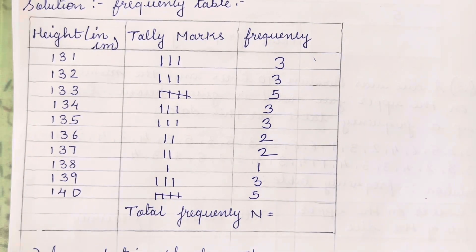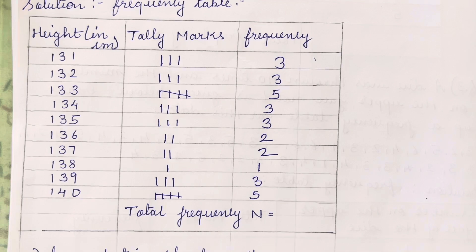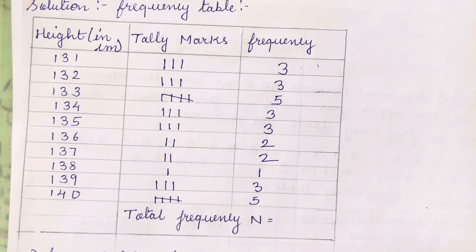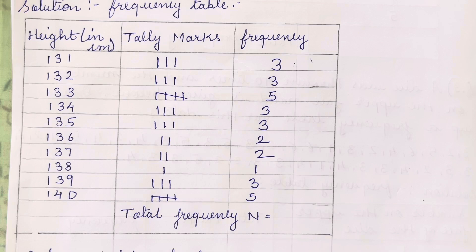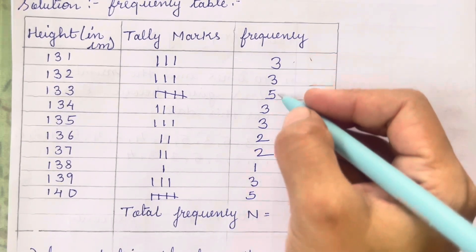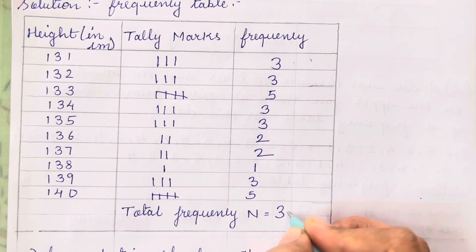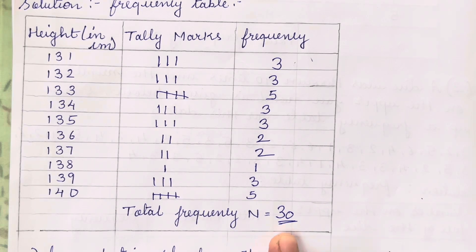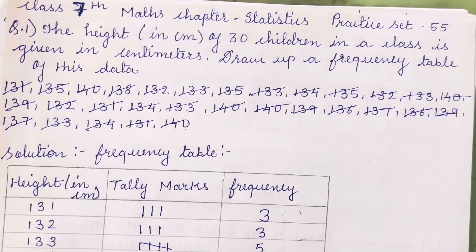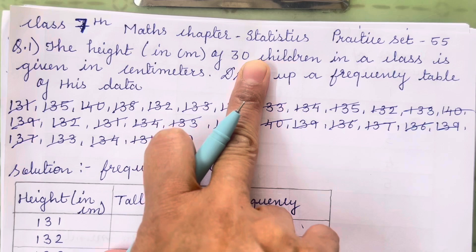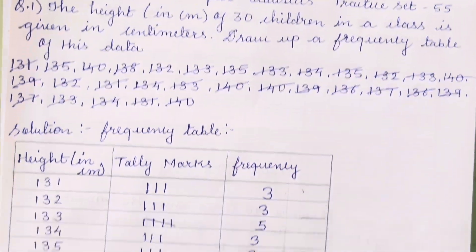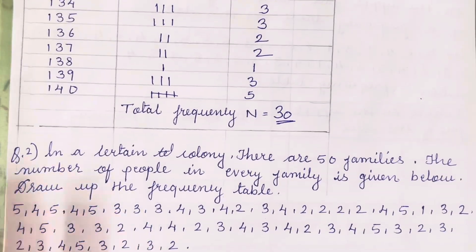Now that tally and frequency are done, you have to calculate the total frequency — that means add all the numbers. Once you add all the frequencies you are going to get 30. If you get this answer, it is correct, and you will find the answer in the question itself.